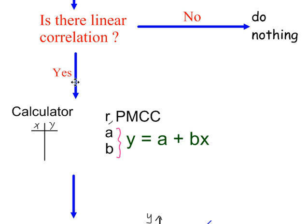If there is linear correlation, then enter the data into your calculator. So you get this table, x and y values. You can work out the PMCC value, so that's r. You can work out the coefficients a and b to put into the regression equation y = a + bx.